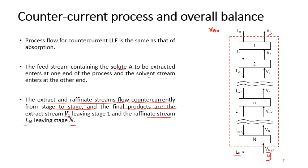At L0 you have XA0, at LN you have XAN, at VN+1 you have YA(N+1), and at V1 you have YA1. As in single-stage LLE, we track only two component compositions — the third can be obtained by material balance. The full notation includes XA0, XC0, XAN, XCN, YA(N+1), YC(N+1), YA1, and YC1. In this lecture, A is the solute and C is the solvent phase.